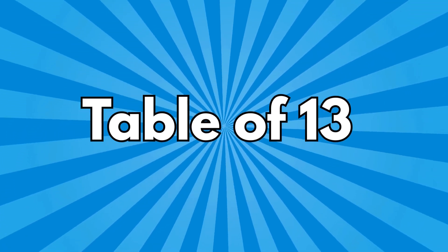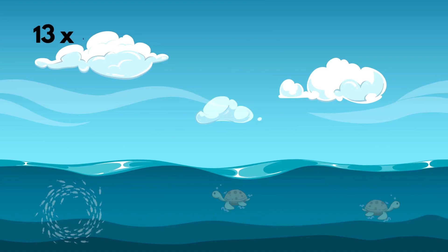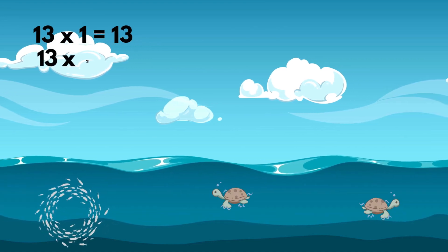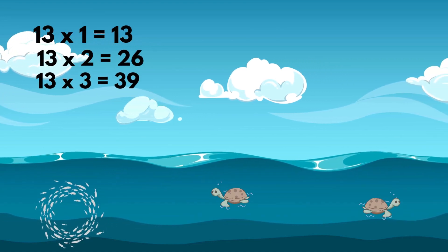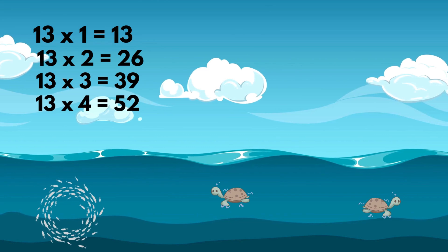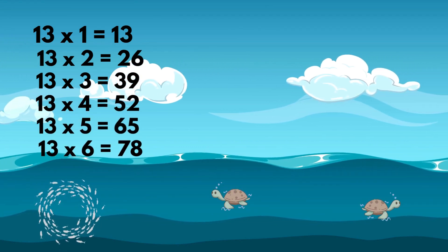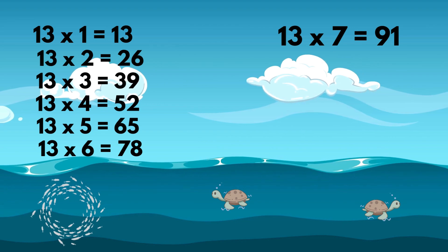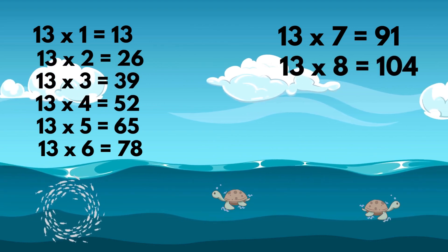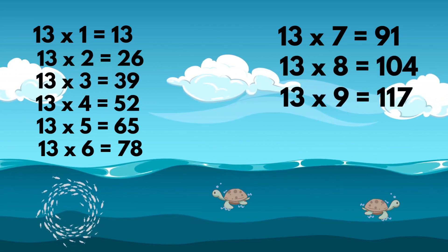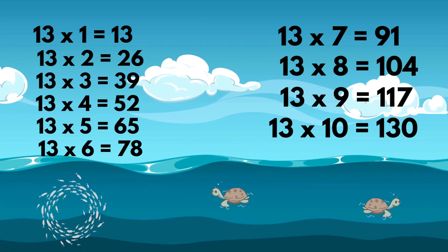Table of 13. 13 1's are 13, 13 2's are 26, 13 3's are 39, 13 4's are 52, 13 5's are 65, 13 6's are 78, 13 7's are 91, 13 8's are 104, 13 9's are 117, 13 10's are 130.